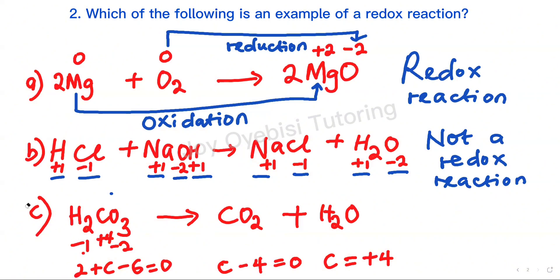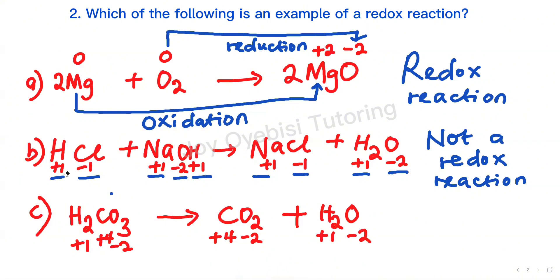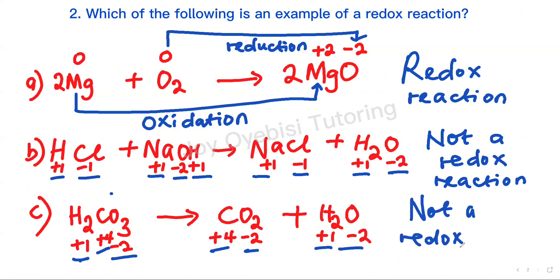Moving to the next carbon on the right side — oxygen is negative 2, so negative 2 times 2 is negative 4, and carbon equals positive 4 as well. Hydrogen is positive 1 again, oxygen is negative 2. Checking what happened: hydrogen is the same on both sides, carbon is positive 4 on both sides, and oxygen is negative 2 on both sides. So this is not a redox reaction — there is no reduction and no oxidation happening simultaneously. Our answer is A, which is the redox reaction.